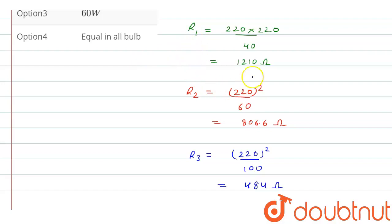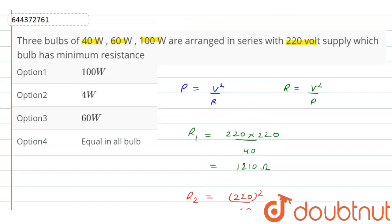If you compare all these, then 100 watt bulb have minimum resistance. Therefore, option one is the right answer. Thank you for watching.